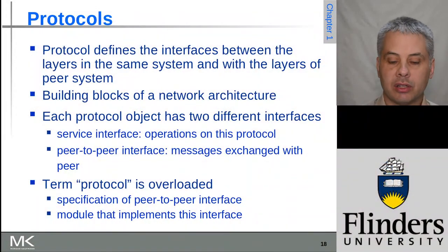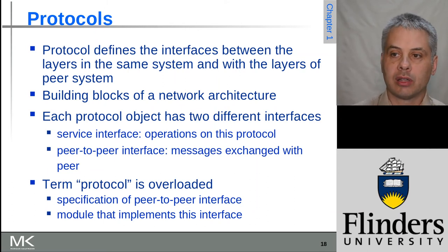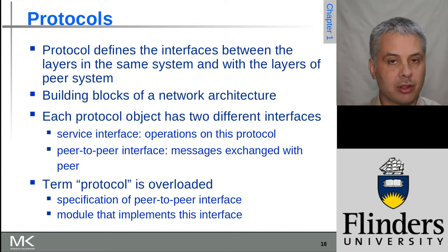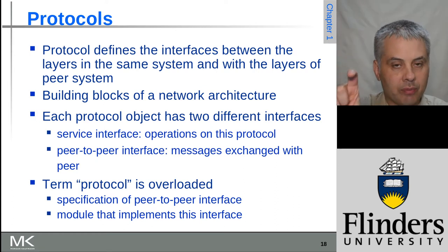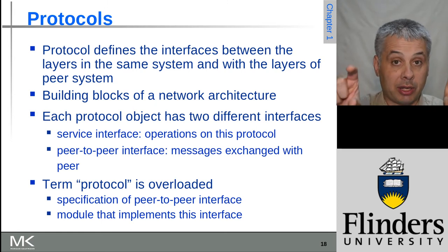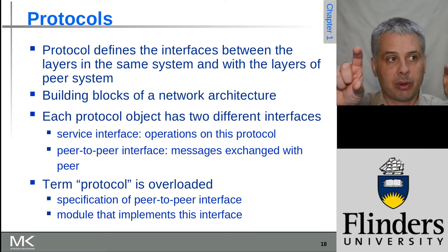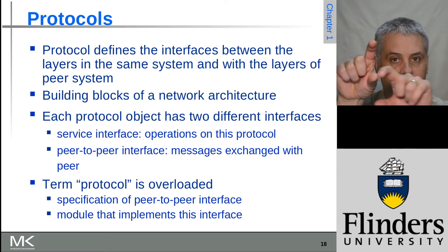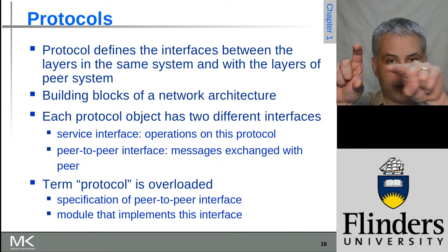These protocols are a really important part of a computer network architecture. They define the interface between the layers in the same system. When you connect two systems using given protocols, the same layer on each host has a peering relationship where the network abstraction below conceals all the complexity and lets them act as though they're communicating directly to one another as peers.